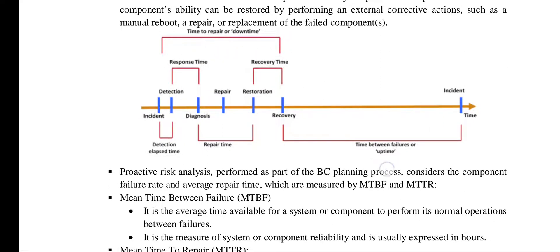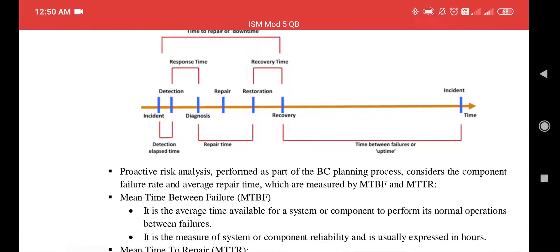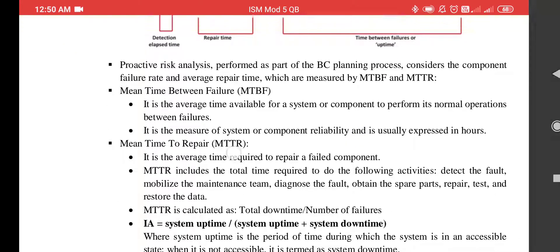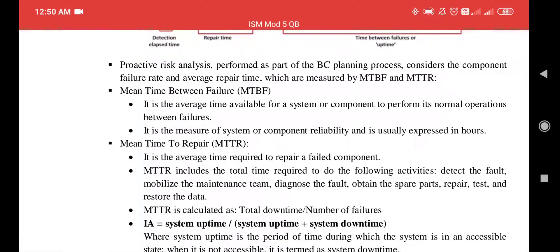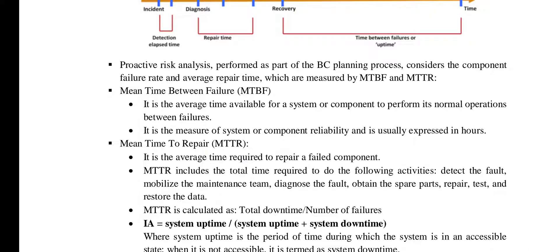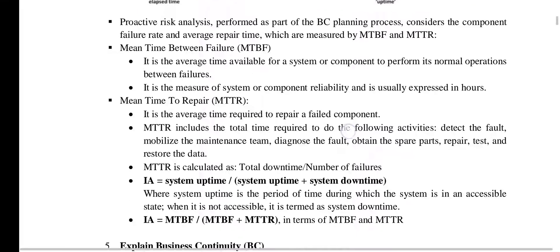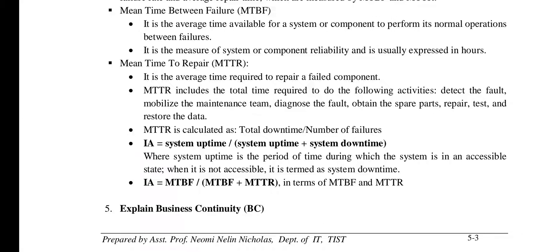The time between failures — from recovery to the next incident — is the uptime. Information availability can be measured using two terms: MTBF (Mean Time Between Failures) and MTTR (Mean Time To Repair). Information availability (IA) is given as: system uptime divided by (system uptime + system downtime), which also equals MTBF divided by (MTBF + MTTR).